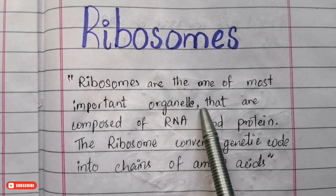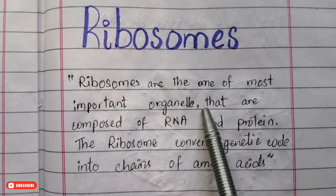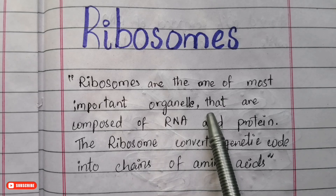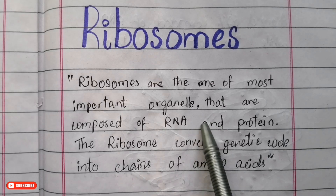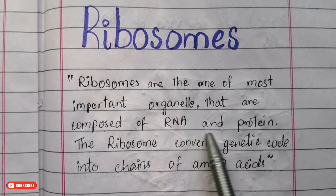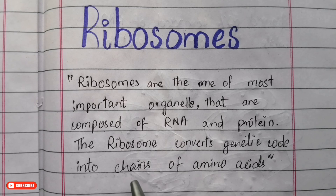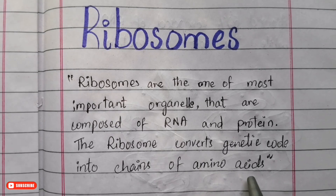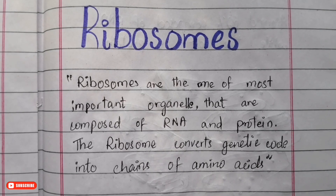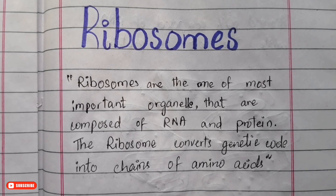Ribosomes are one of the most important organelles found inside the cells of eukaryotes and prokaryotes. They are composed of RNA and protein. The ribosome converts genetic code into a chain of amino acids. This is a brief introduction to what a ribosome is.